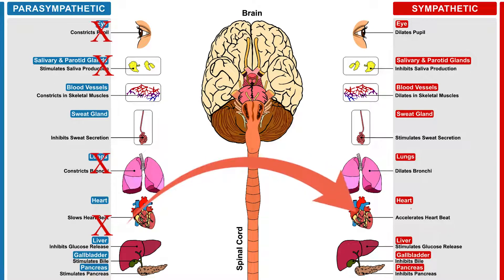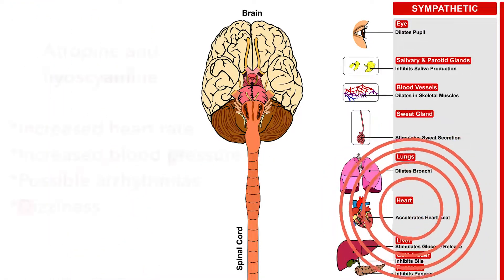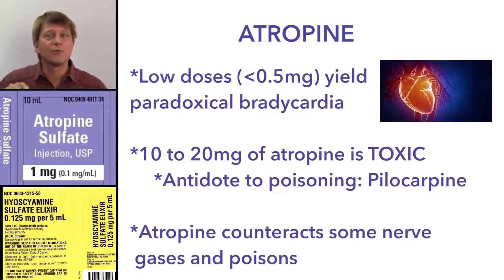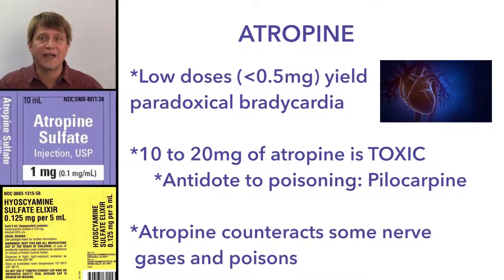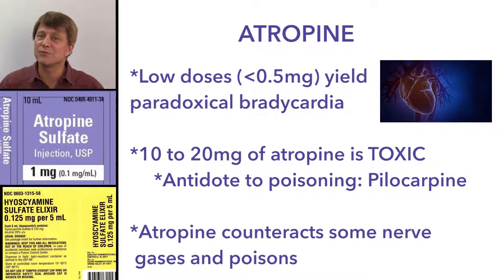In the heart, these drugs increase the firing of the sinoatrial node and the conduction through the atrioventricular node, allowing increased activity of the heart. By doing so, they increase the heart rate and increase the conduction velocity. Although we can predict most side effects of anticholinergic agents by knowing the actions of the parasympathetic nervous system, we wouldn't be able to guess this next one.